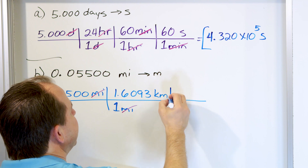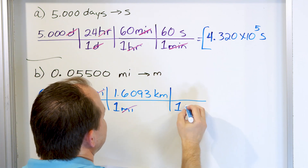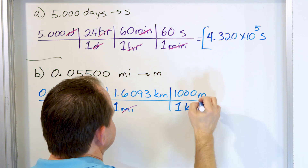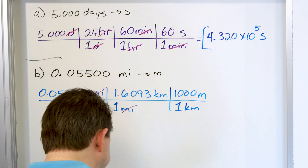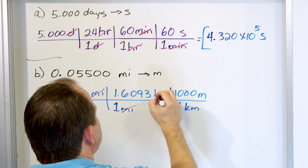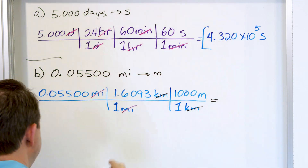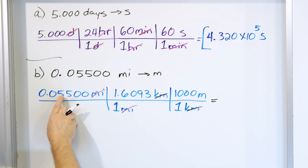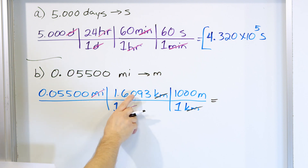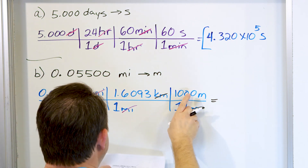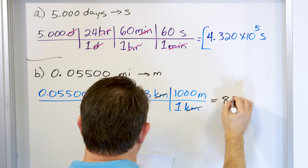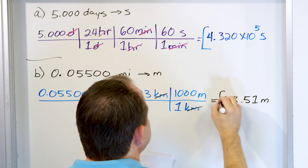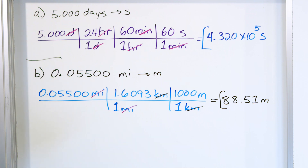Once I have it into kilometers, it's very easy to go to meters. One kilometer is 1,000 meters, and the kilometers cancel, leaving meters. So if you take 0.05500 times 1.6093 and then times 1,000, you get 88.51 meters. You know that's the right answer because meters is the only unit left.